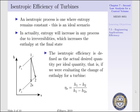Our isentropic efficiency is defined as the actual desired quantity, i.e., our actual work out of our turbine, per the ideal quantity. That is, if we are evaluating the change of enthalpy for our turbine,